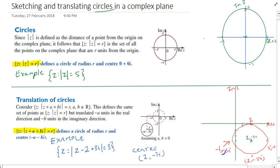Don't put commas in there. Put negative 1, negative 3i, 2, negative 5i, 5... no commas, no commas, boom, boom, and 2 minus 3i. Alright, that's sketching and translating circles in a complex plane.